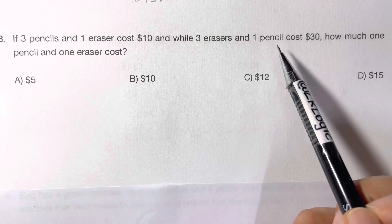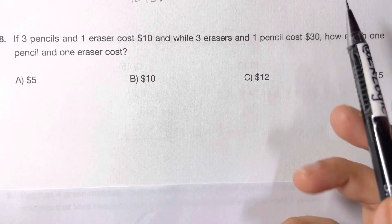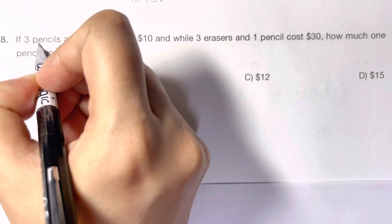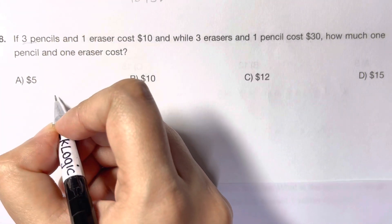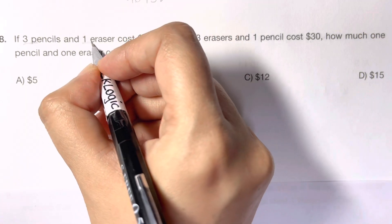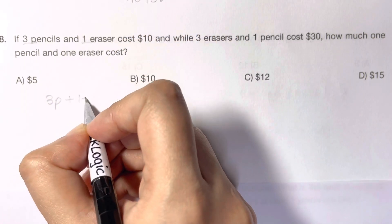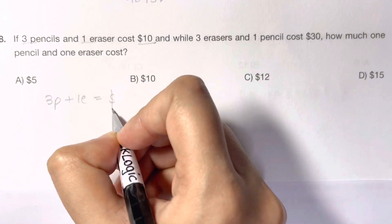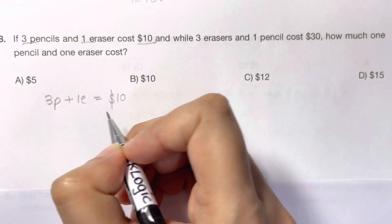How would we write that? Three pencils - I'm going to denote it with 3p. Three pencils plus one eraser - 1e. So I'm going to write that: three pencils plus one eraser equals ten dollars.